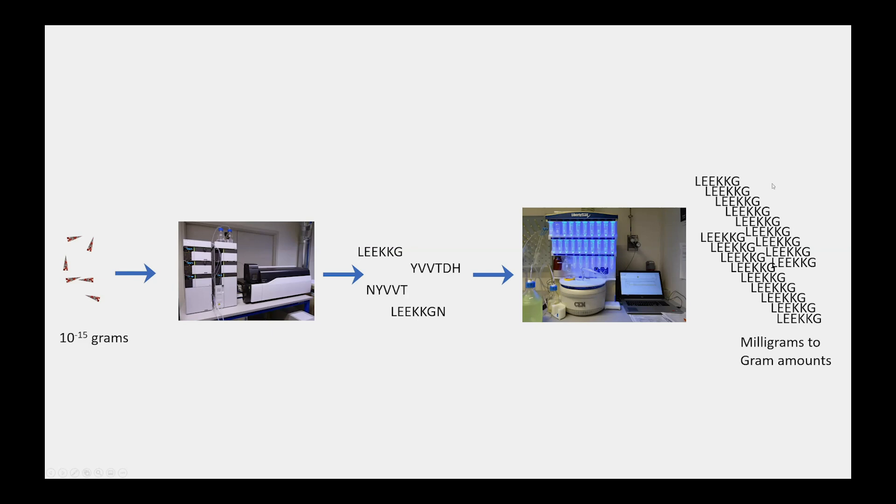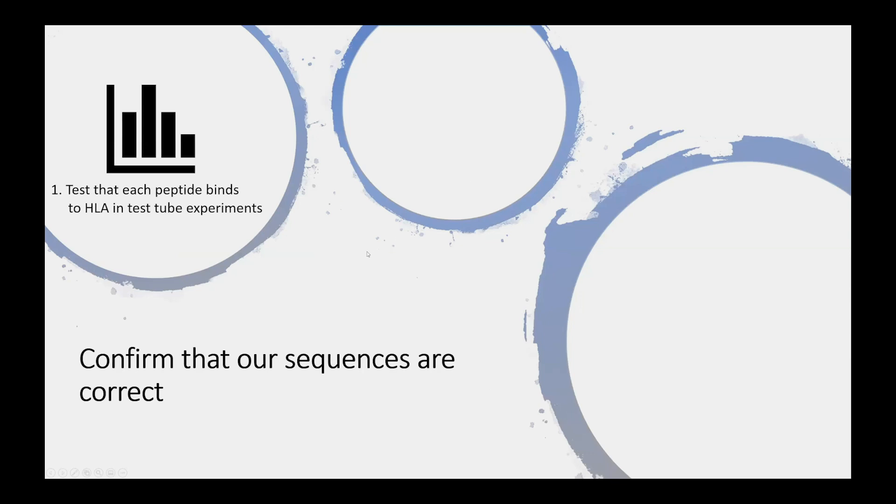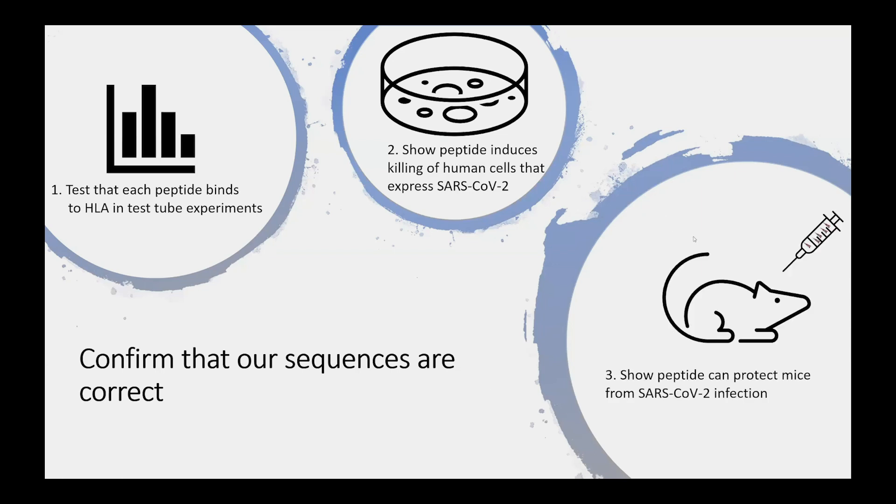Once we have that much peptide, there are many experiments we can do. First, we want to ensure that the peptides that we've sequenced actually do indeed work. So we do test tube experiments again to verify that the peptide will bind to HLA in a specific kind of test tube experiment called a binding experiment. Next, we will show that the peptides can induce the killing of human cells that express SARS-CoV-2 virus using human stem cells. And finally, we want to confirm that, at least in animal models, that the peptides will induce a protective T-cell response that will protect from SARS-CoV-2 infection.